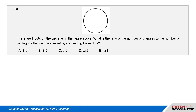Question 3. There are nine dots on the circle, as in the figure above. What is the ratio of the number of triangles to the number of pentagons that can be created by connecting these dots?